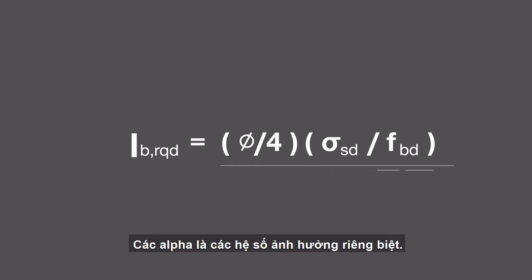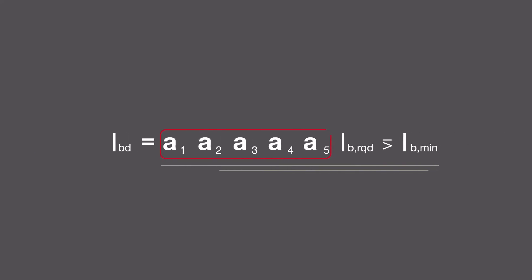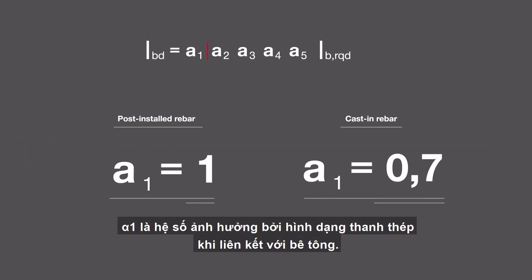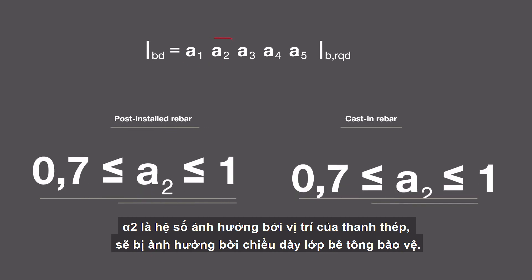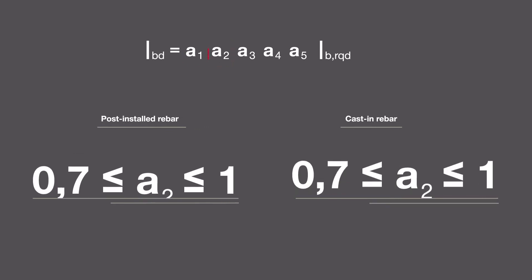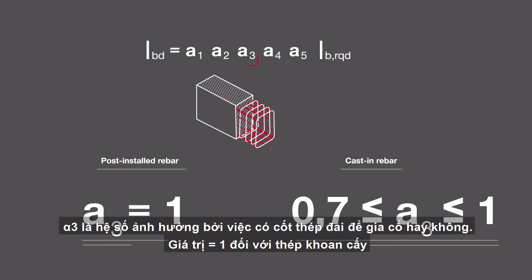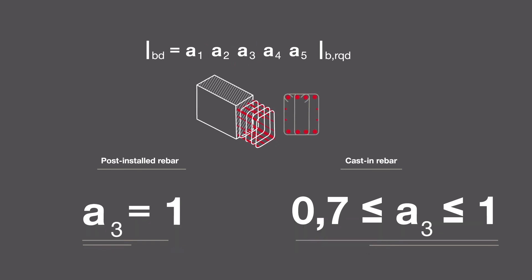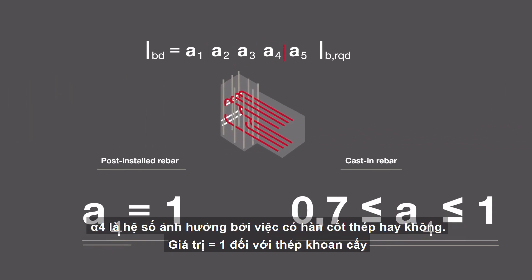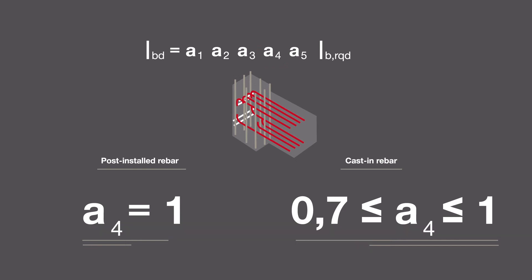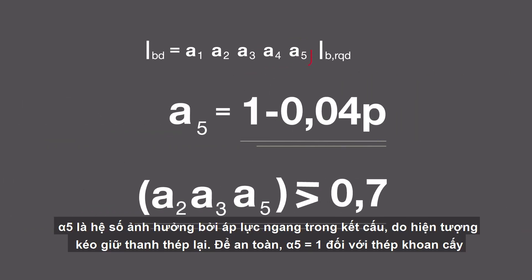The alphas are specific factors. Alpha 1 takes into account the shape of the rebar. Alpha 2 takes into account the position of the rebar with respect to concrete cover. Alpha 3 takes into account the confinement by transverse reinforcement. Alpha 4 takes into account the confinement by welded transverse reinforcement, and alpha 5 takes into account the effect of confinement by transverse pressure.